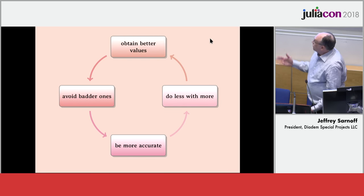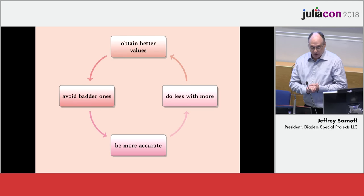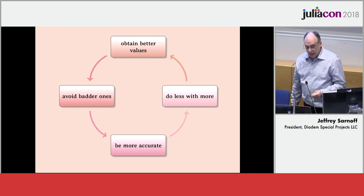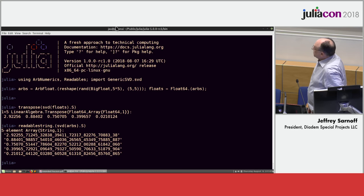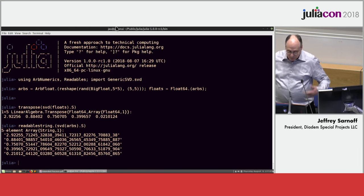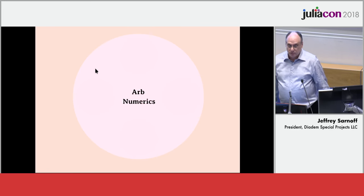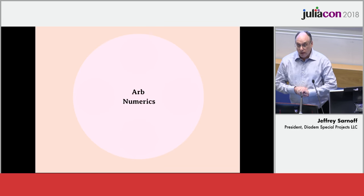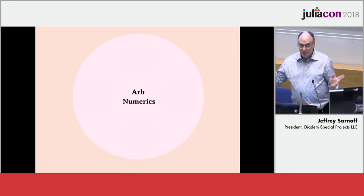At the end of the day, this is the stuff I care about with numerical computing: I want to get better values, I want to avoid the bad ones, I'd like my results to be more accurate than they otherwise would be, and I really want to do a whole lot less with a great deal more power. At the moment this sort of activity is fragile, but we're getting there. This is my introduction to ArbNumerics — it's still preliminary. When it's really ready to use, I'll announce it on Discourse. But as of 20 minutes ago, it built, and it will do what you saw here today.